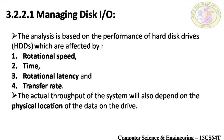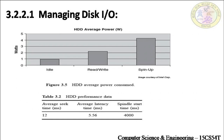We need to minimize data movement — minimize the number of accesses to the hard disk. Looking at a simple bar chart: on the x-axis are three operations — idle, read/write, and spin-up. On the y-axis is power measured in watts. What you can deduce is that the spin-up operation takes the most power and the idle operation takes the least. So to write good application programs, we need to ensure that spin-up is kept to a minimum.